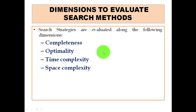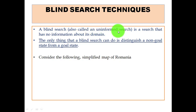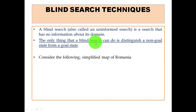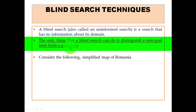Now, blind search techniques. The word 'blind' in this context means it will be an uninformed search. A blind search, also known as uninformed search, is a search that has no information about its domain. The only thing a blind search can do is distinguish a known goal state from a non-goal state. A blind search technique is purely dependent on distinguishing a goal state from a non-goal state.